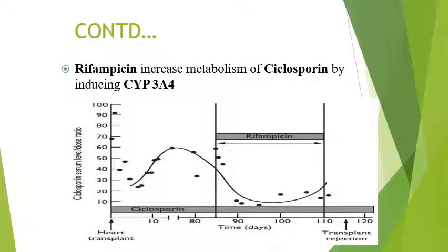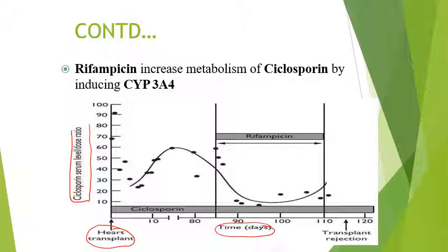This slide shows how rifampicin increases metabolism of cyclosporine by inducing CYP3A4 enzymes. These are the serum levels of cyclosporine and these are the time in days. A patient goes for a heart transplant, and cyclosporine is given to decrease the person's natural immunity — because if immunity is too high at this point, it may cause transplant rejection. To minimize the chances of transplant rejection, we administer cyclosporine. On day 0 the patient undergoes heart transplantation, then cyclosporine dosing is initiated around day 2 or 3, and the serum level increases.